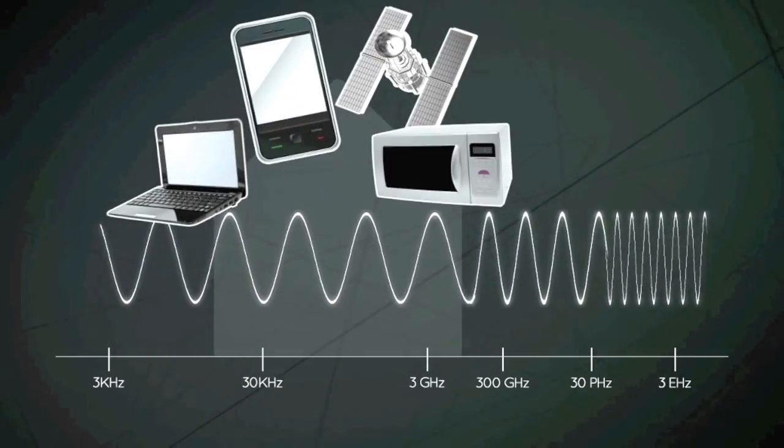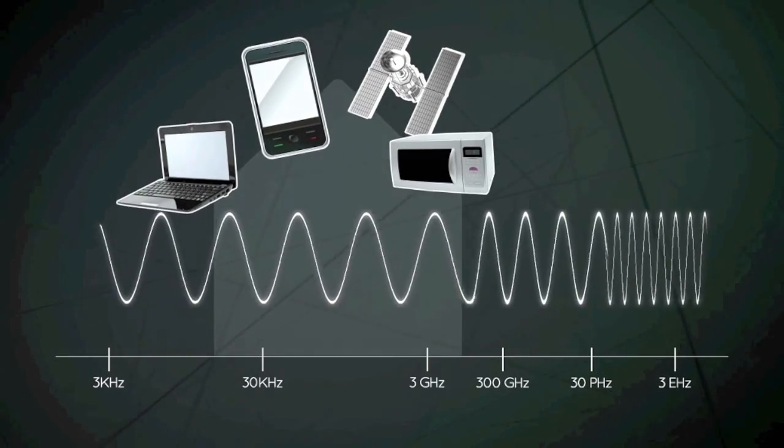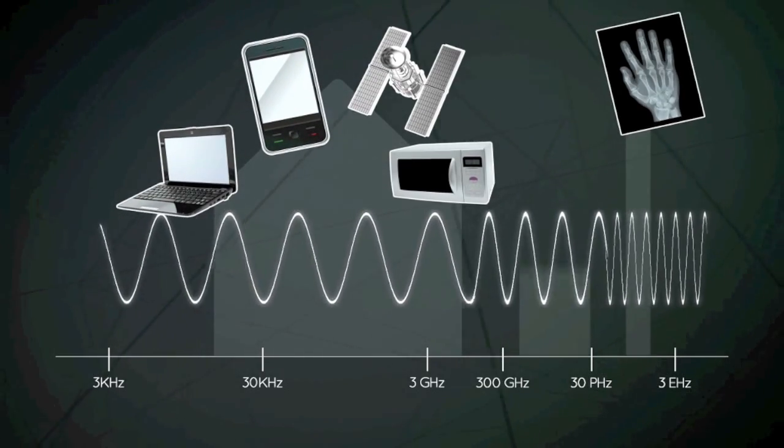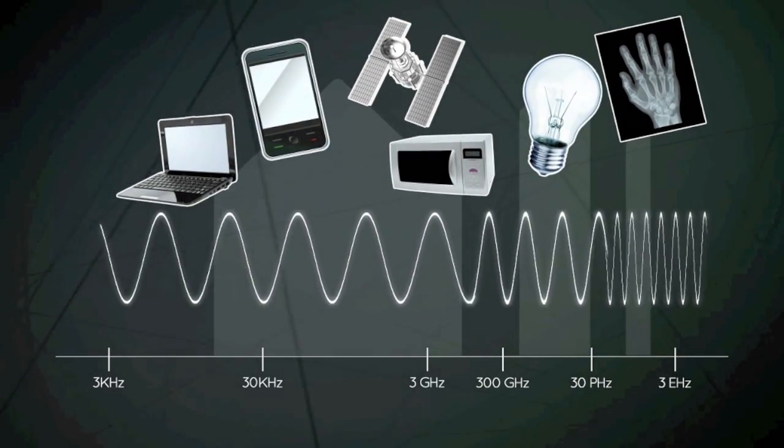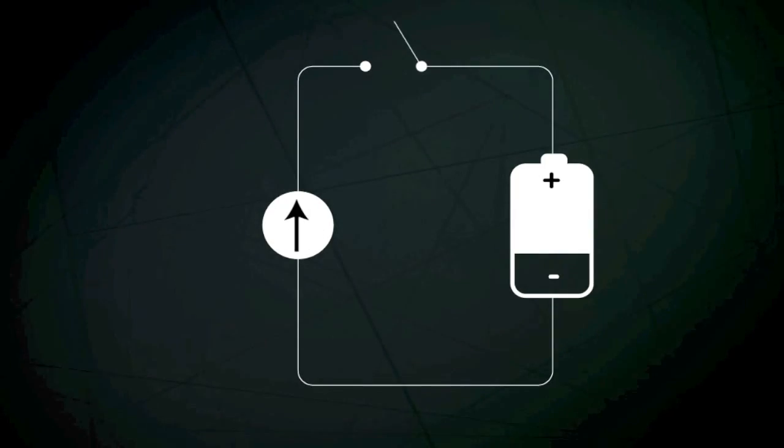Radio waves are part of the electromagnetic spectrum, which also includes x-rays and visible light. Generation of radio waves uses the relationship between electricity and magnetism.